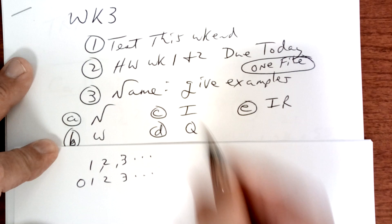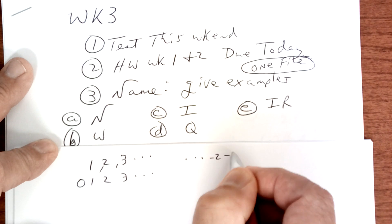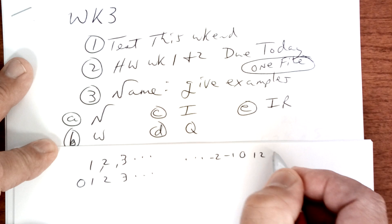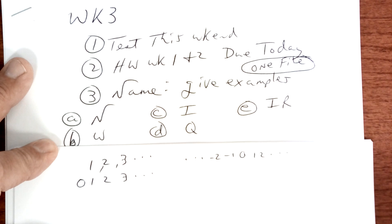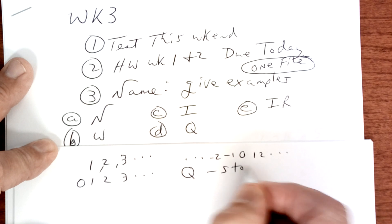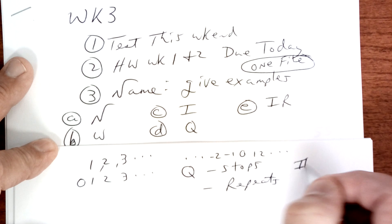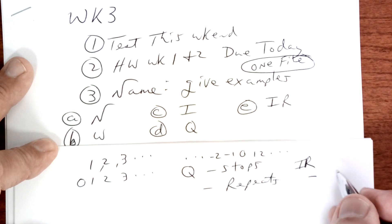Integers, negative numbers and positive numbers. Rational number stops or repeats. Irrational number does not stop and not repeat. Make sure you know that.